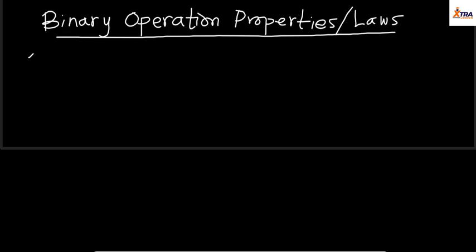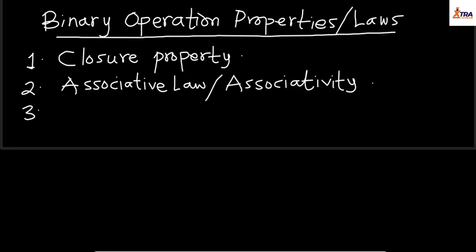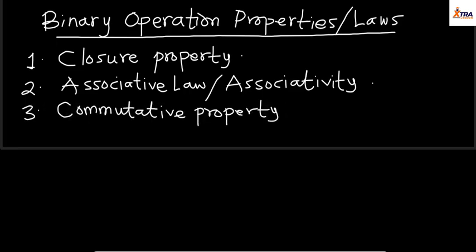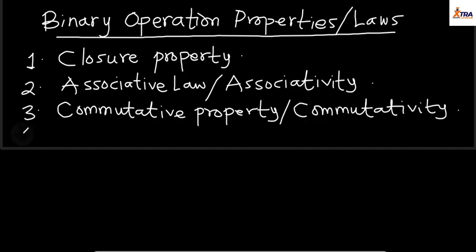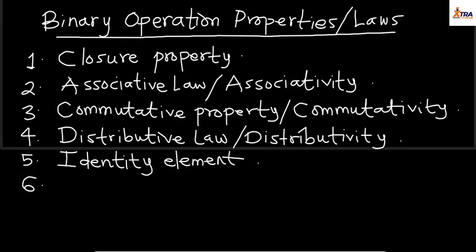They are either known as the binary operation properties or the binary operation laws. The very first one is the closure property. Another one is the associative property, also known as associativity. Next is the commutative property, or commutativity. Then we have the distributive law, or distributivity. We also deal with the identity element, and finally the inverse element. These are the properties we'll be considering under binary operations.